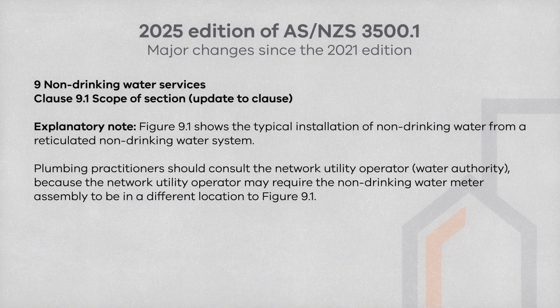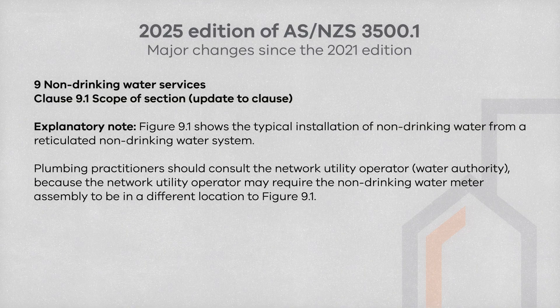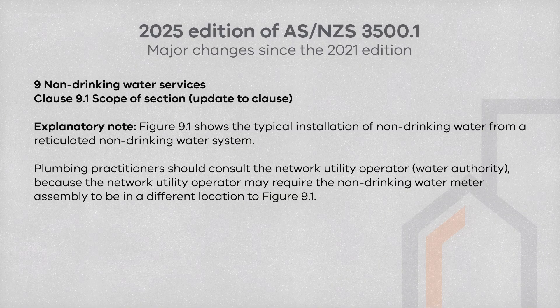Clause 9.1 covers the requirements of non-drinking water services. Ensure to check the National Construction Code and the Plumbing Code of Australia regarding the limitations on the use of non-drinking water. Practitioners must ensure there is consultation with the relevant network utility operator, as they may stipulate that the non-drinking water meter assembly is installed in a different location. For more information, refer to Figure 9.1, which shows the typical layout of a non-drinking water installation.